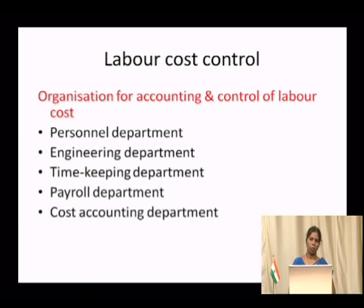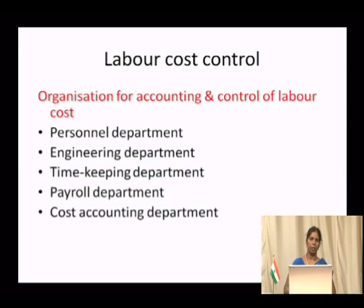Direct labor, as I have told, is that which can be conveniently identified with any person, any cost center, or any location. In the garment industry, salaries paid to a tailor are direct labor. A tailor is a person who is going to convert the cloth into a garment, therefore his salary is known as direct labor. Indirect labor is labor whose salaries cannot be identified with any person, locality, or activity, as the services of such labor have been devoted to many activities.